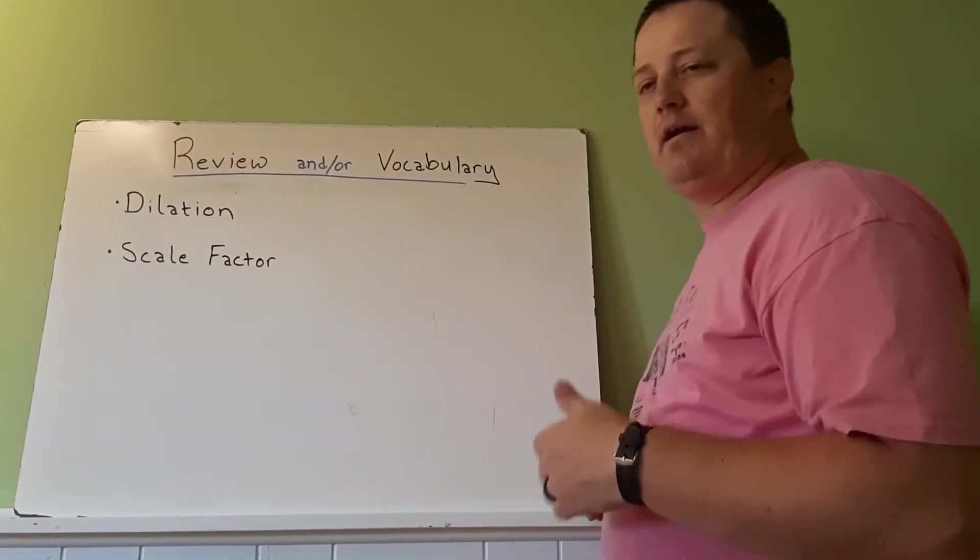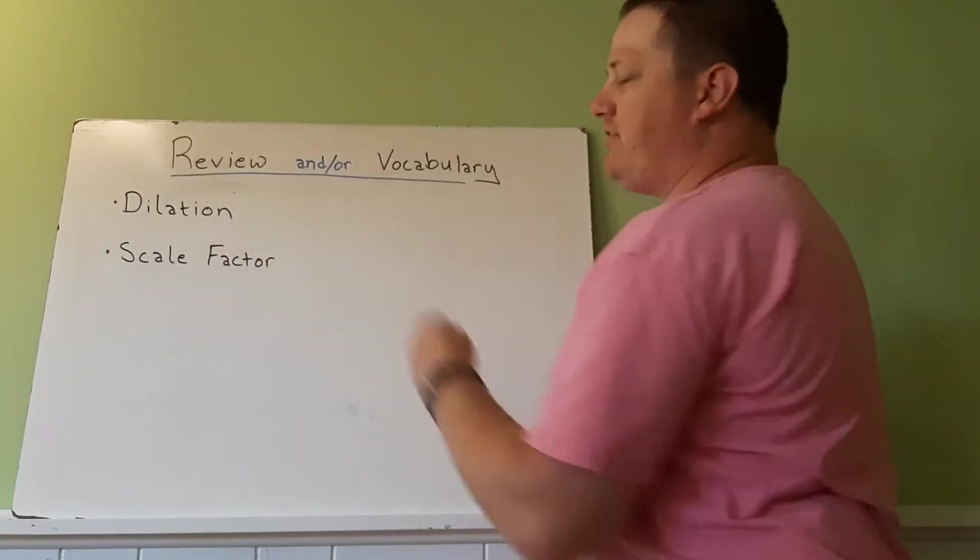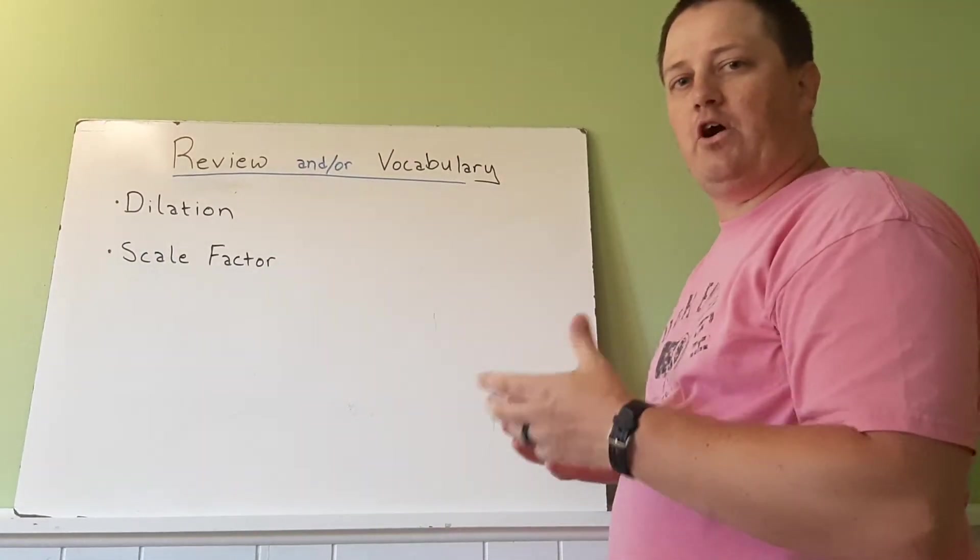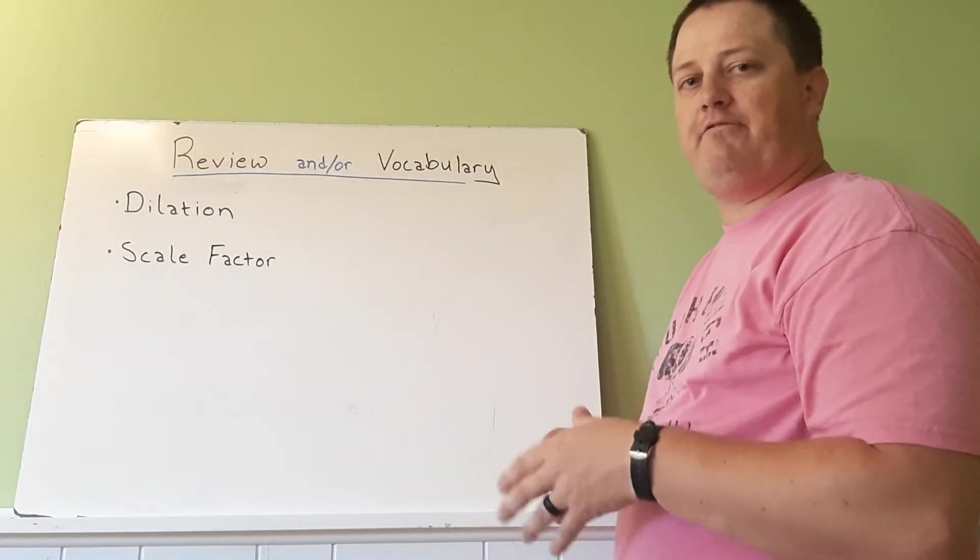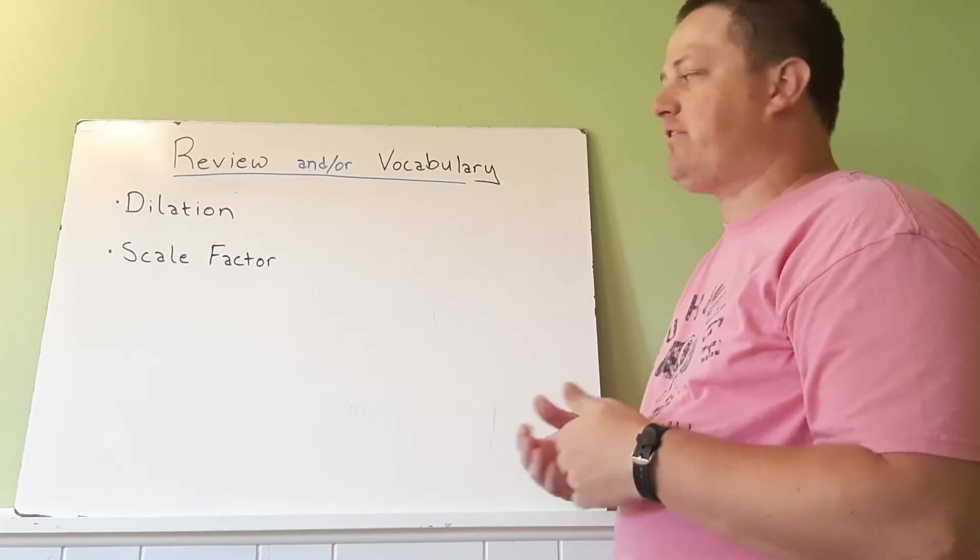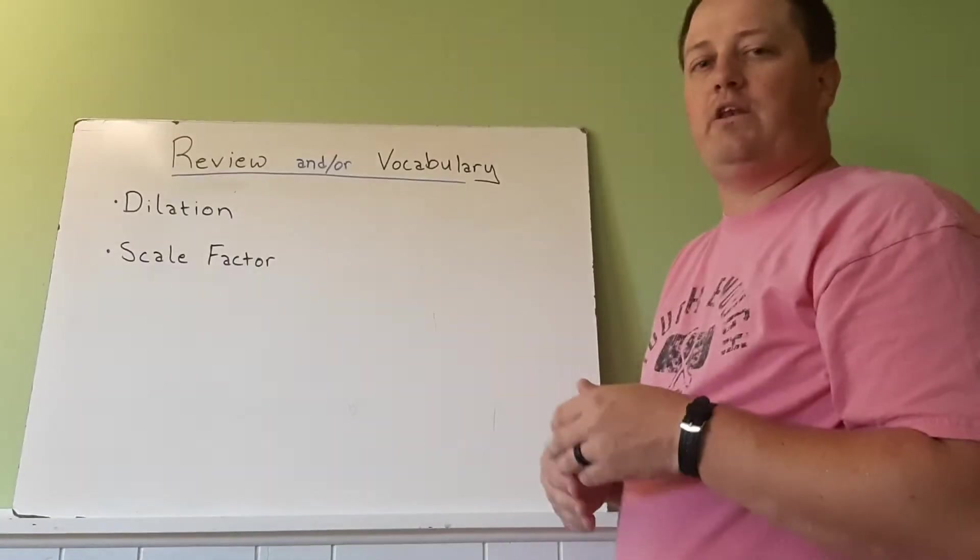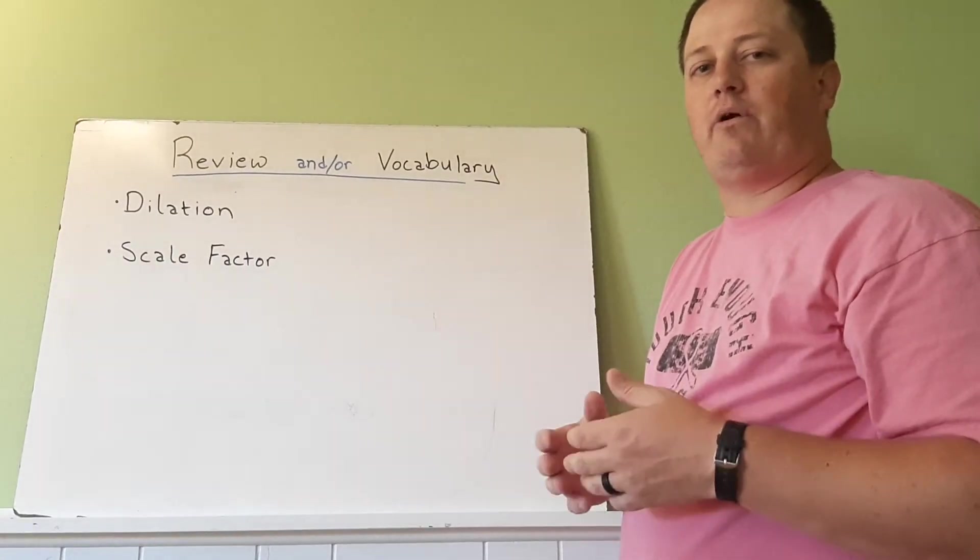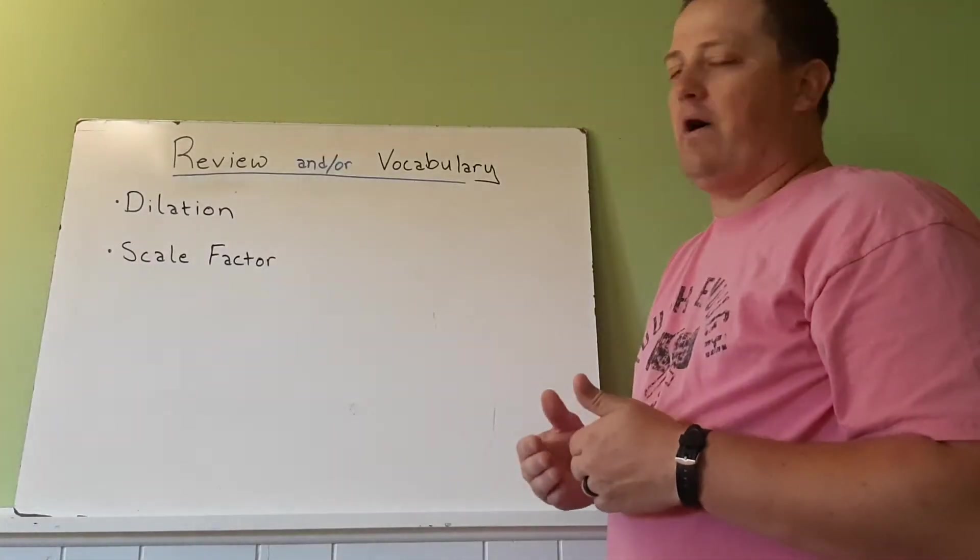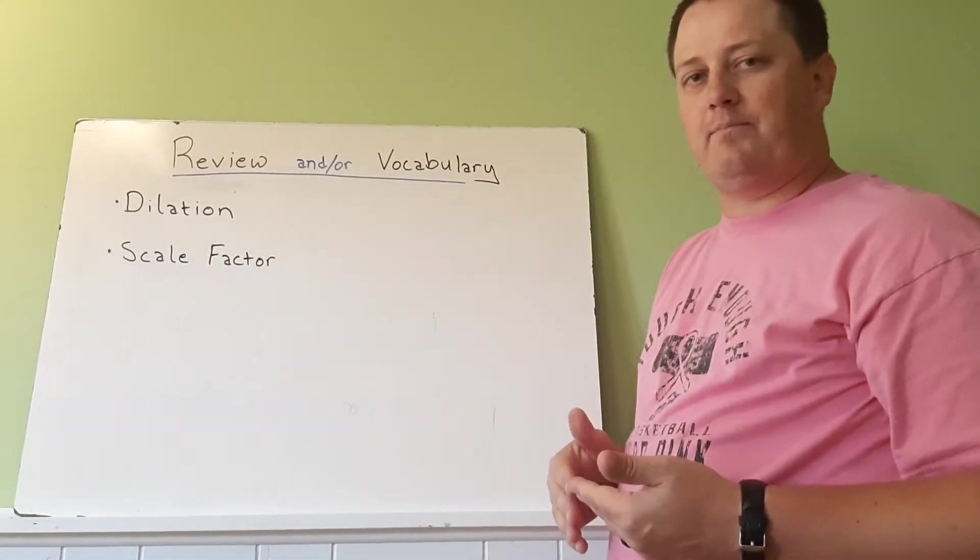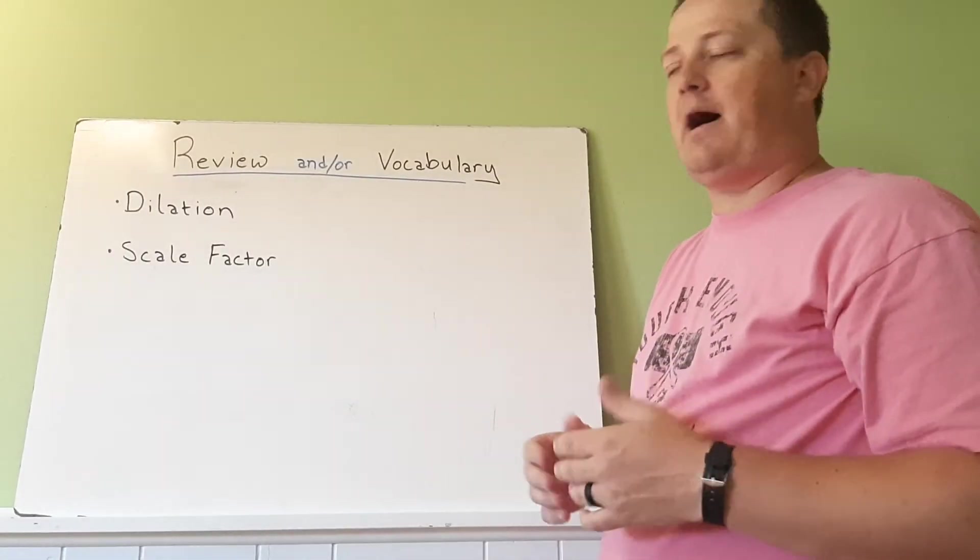Our vocabulary is still the same. We have dilation, which is just the enlarging or shrinking of a figure using a scale factor and a center. And then we have scale factor, the number that we're using to enlarge or decrease the shape, whether it is doubling or cutting something in half or some other combination.